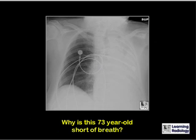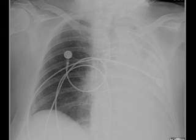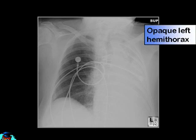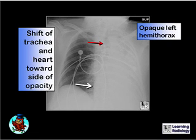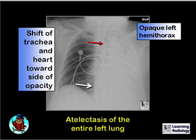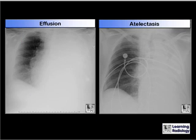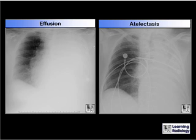This is Diagnosis 9. Why is this 73-year-old short of breath? Again there is an opacified left hemithorax, but in this case the trachea and heart are shifted toward the side of opacification — indicating volume loss, characteristic of atelectasis of the entire left lung. This patient also had an obstructing bronchogenic carcinoma. Note the difference from the pleural effusion case. Remember that with underlying malignancy, there may be a balance between pleural fluid and atelectasis, so even with an opacified hemithorax, there may be no shift of the heart or mediastinal structures.